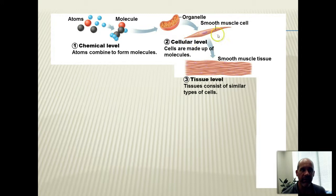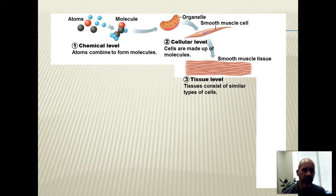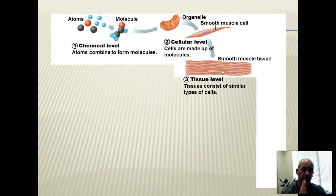Moving up to the next level: all of the different kinds of cells in your body make up various tissues. We'll study tissues more in Unit 2. Tissues are kind of like — your textbook describes them as the fabrics of the body that get woven together to create all of your various body parts. Tissues are made up of cells, and often those cells have filler spaces between them that you'll learn more about later.